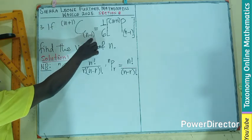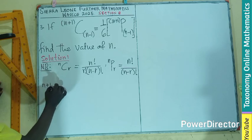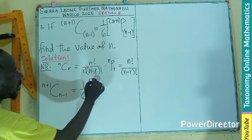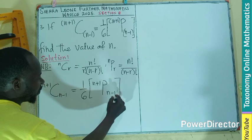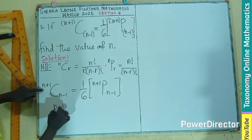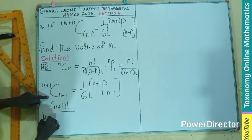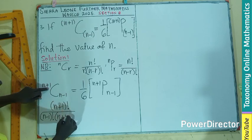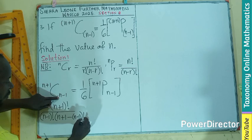So this is the n. All of this is the r. So if I pick the first one, let me see, repeat it. If n+1 combination n-1 equals 1/6, n+1 permutation n-1. If I am doing this, I am picking n+1 as a factorial from here divided by r, which is n-1 factorial, times n+1 minus n-1 factorial.